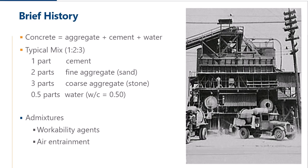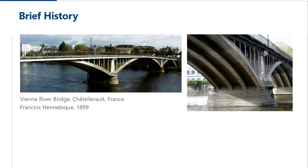Some of the early designers using reinforced concrete include the Vienne Bridge, designed by François Hennebique and G.A. Wayss, who bought the Monier patents. This was built in 1899 and was the longest-spanning reinforced arch bridge of the 19th century.